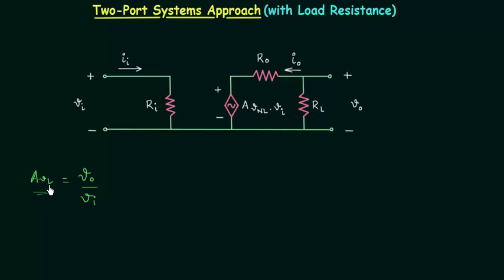The voltage gain here is the loaded voltage gain. So first we will obtain the output voltage Vo, and to calculate it I will apply Kirchhoff's law in this loop. You can see the direction of output current is from right to left. This is the direction of load current in this branch, and according to this direction the load current in the branch of load resistance is from bottom to top. Now I will apply Kirchhoff's voltage law.